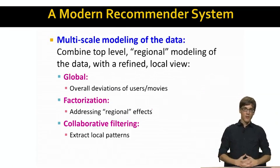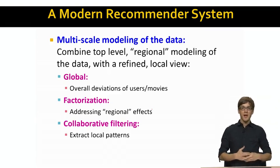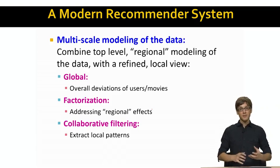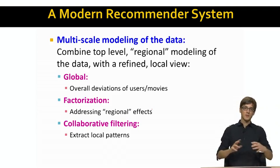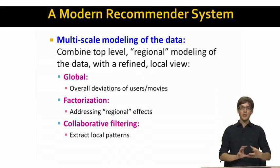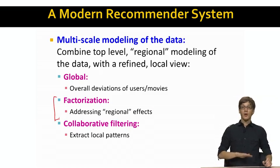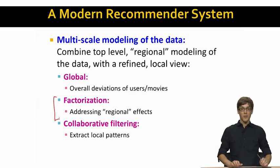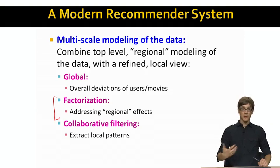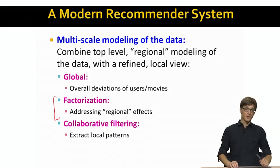A modern recommender system is composed of several different components. We adopt a multi-scale modeling approach to the rating data, combining several different views — from a global top-level view to regional modeling, all the way down to very local interactions between movies and users. Today's lecture focuses on the middle-level regional modeling through matrix factorization, which relates nicely to the singular value decomposition and dimensionality reduction lecture we covered previously.